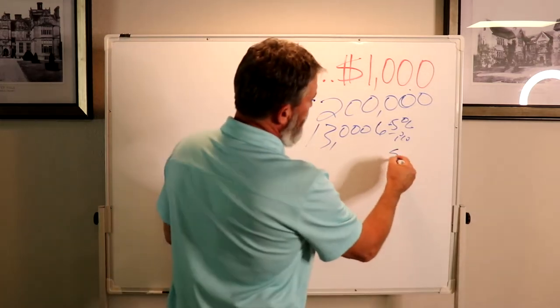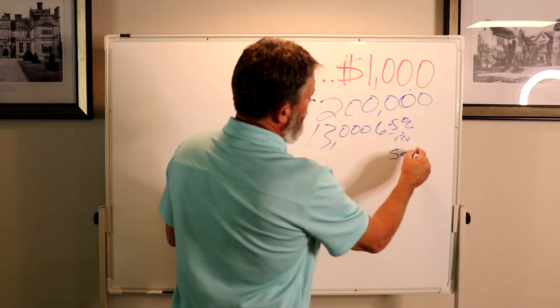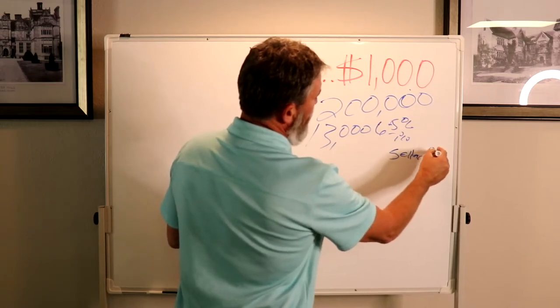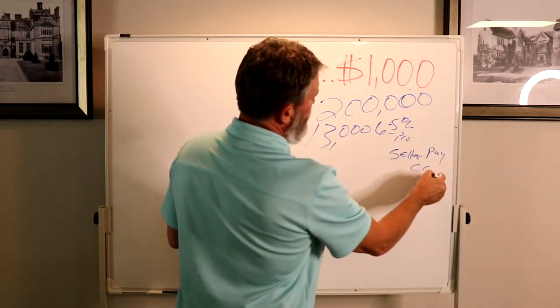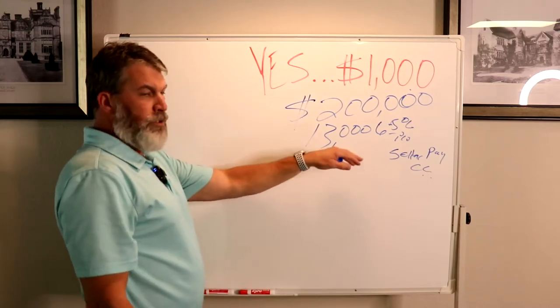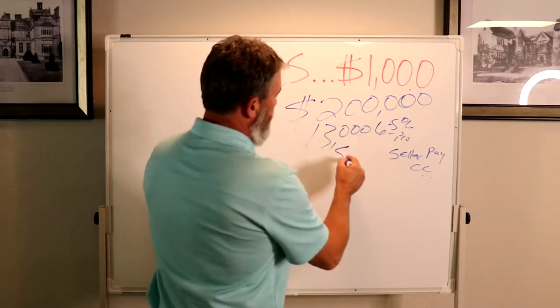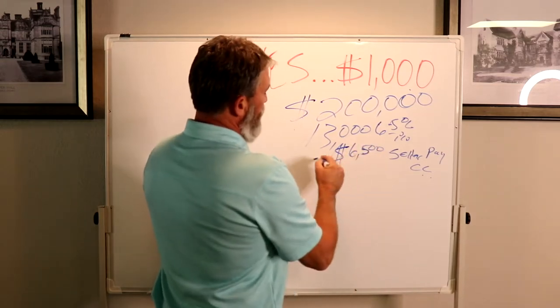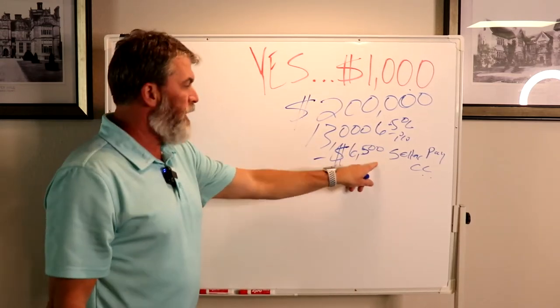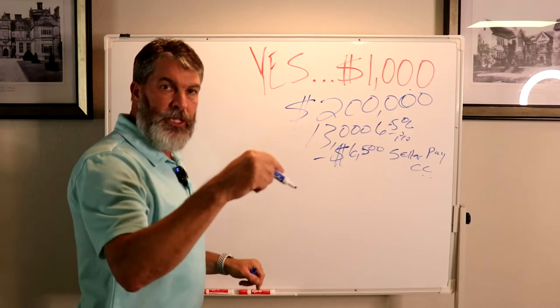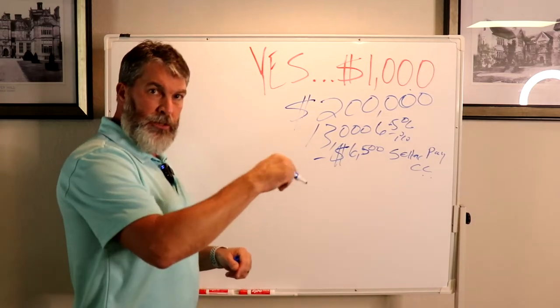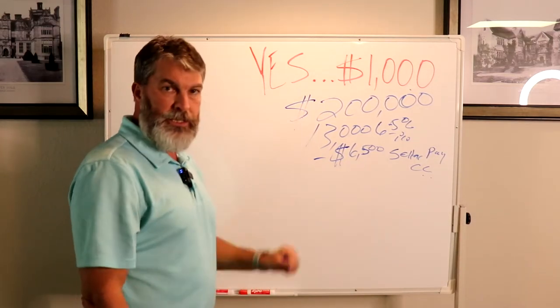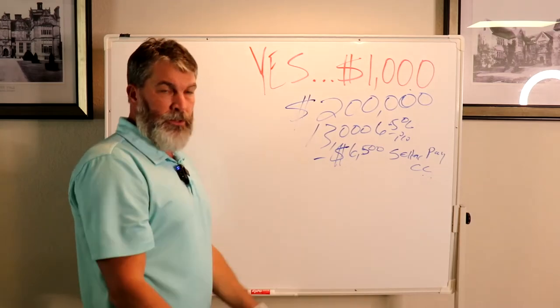So the seller, once you have a good agent, the seller can pay closing cost. The closing costs are going to run you about three and a half percent, so $6,500. You don't have to pay that because the seller can pay it for you. We can write that in the contract and say the seller will pay closing cost and prepaid not to exceed $6,500.